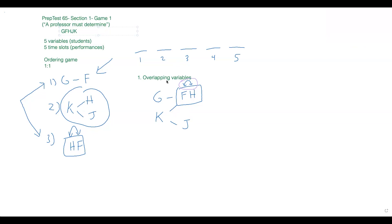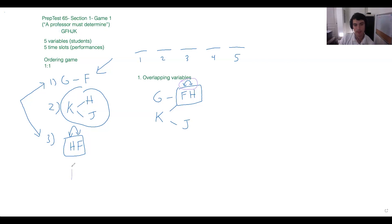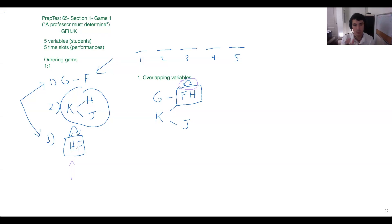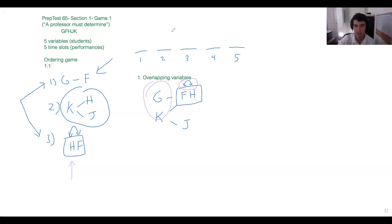Let's think about rule three — to read it one more time: 'H must perform either immediately before or immediately after F.' What we're trying to write is that they're always going to be together. It could be H comes first or F comes first, but the main thing to internalize is nothing is going to be in between them. Because of that, we can think of it as one big box — it can go here or here, it's just taking up two spaces.